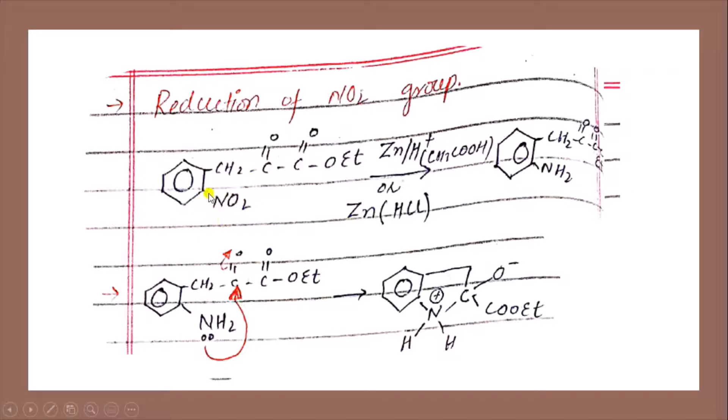For the reduction of NO2 group, we use mainly catalysts like zinc in the presence of H positive. This H positive can also be replaced by acetic acid, or we can do the reduction in the presence of zinc and HCl. In the reduction, we will get NH2 in place of the NO2 group, and the upper structure will remain the same.